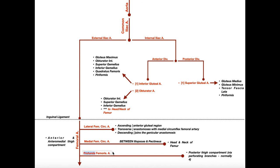The third and largest branch is the profunda femoris artery, also called the deep artery of the thigh. This one is going to provide blood to the posterior thigh compartment — mainly the hamstrings, and also a few of the adductors, particularly adductor magnus. It supplies those muscles via what are called perforating branches: branches that come off the profunda femoris artery and actually perforate through the adductor magnus to reach muscles like the hamstrings. There are normally four perforating branches. Just understand that this artery supplies the posterior thigh.